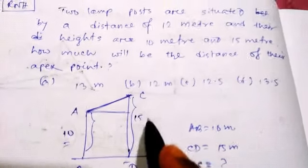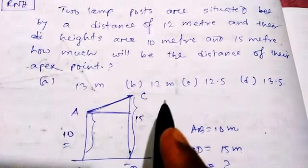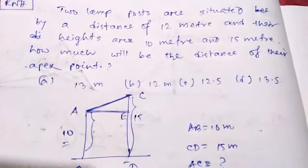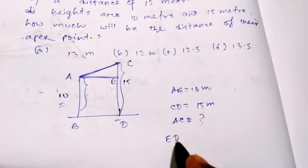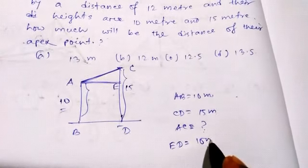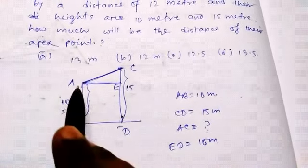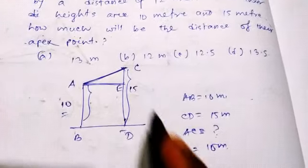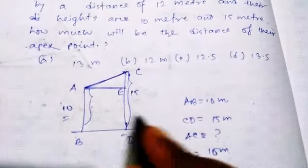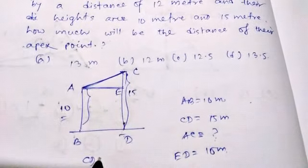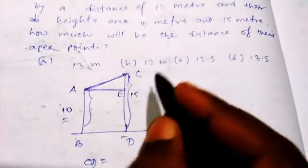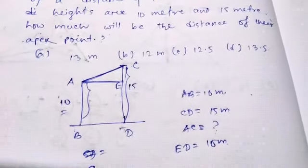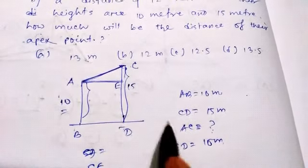Now at this point E, ED will be also 10 meters because AB and ED are the same. Now CE will be CD minus AB.